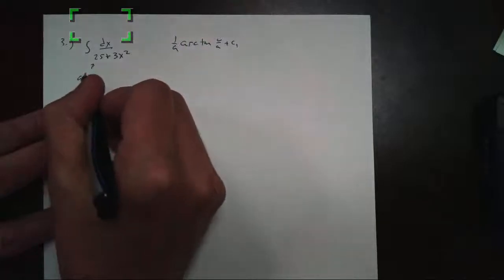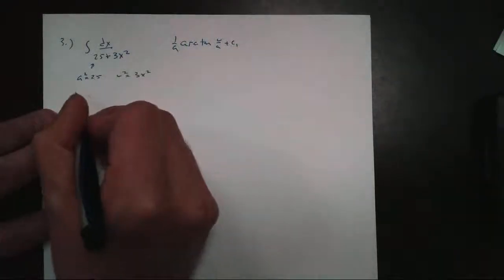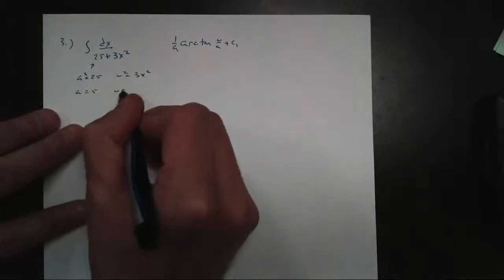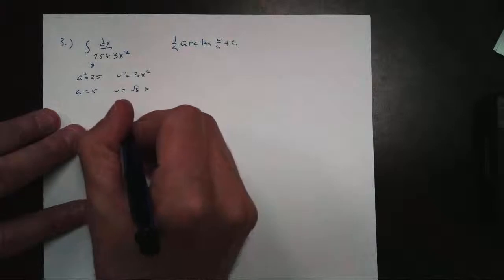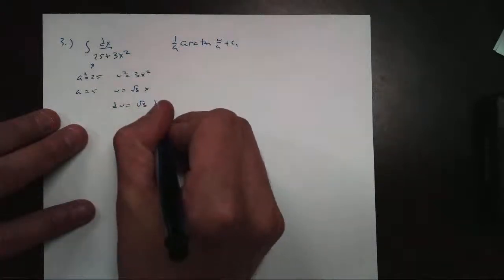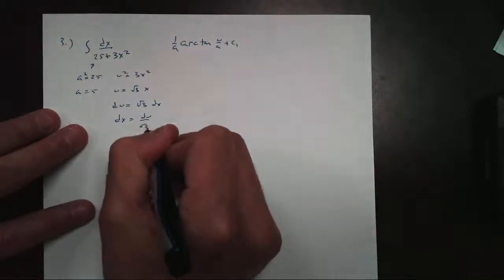So let's write down the rule for arc tangent: u over a plus c. Don't forget it's also 1 over a. So again, I need u and a. Well, here's a again. A squared is 25, u squared is 3x squared. A is 5, u is the square root of 3 times x. And that's okay. Taking the derivative, du equals the square root of 3 dx. So I get dx equals du over root 3.